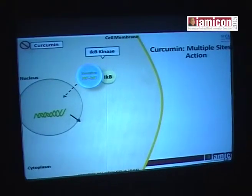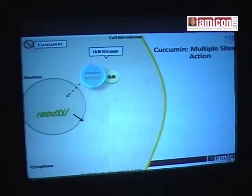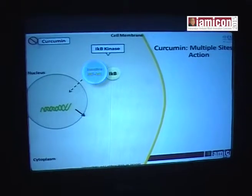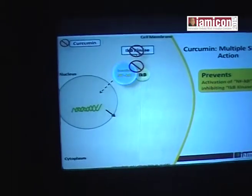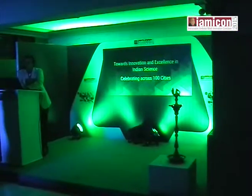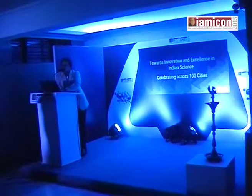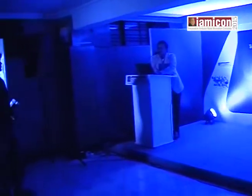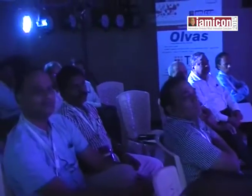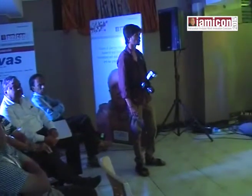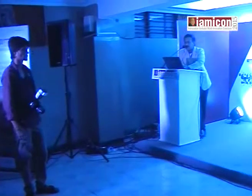This shows the multiple sites of action of curcumin. It inhibits IKB kinase, which prevents translocation of NF-κB into the nucleus and prevents the release of inflammatory mediators. This is the role of curcumin in rheumatoid arthritis and osteoarthritis.